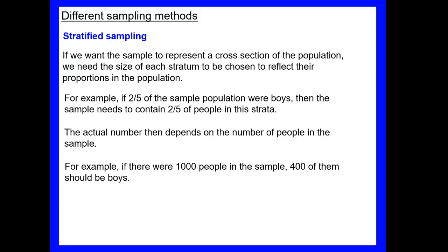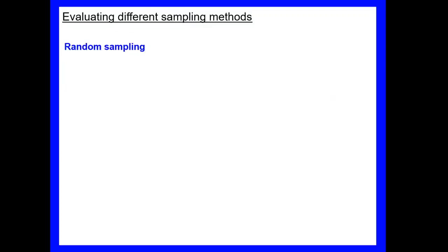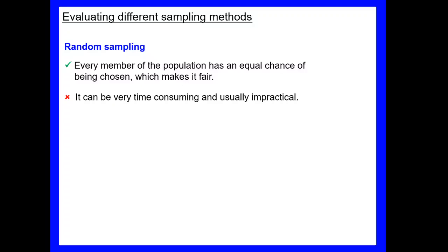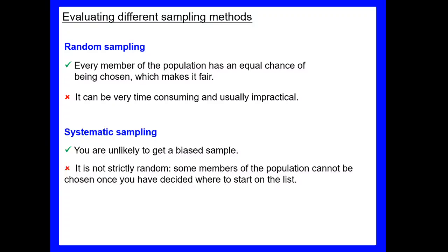Okay, why do we have all these different types of sampling then? So random sampling, random sampling is good because it means every member of the population has an equal chance which makes it really fair. So as I said, things like raffles would use random sampling to choose their values. The downside of that though, it can be very time consuming and is usually pretty impractical. If I had a thousand people and I had to write out all their names and put them in a hat, that would take a really long time. Systematic sampling then, you're unlikely to get a biased sample from it, but it's not strictly random. Remember, some members of the population can't be chosen once you've decided where to start. So if I decide to take a sample of every 10th person, then the people numbered one to nine have got no chance of being chosen at all.